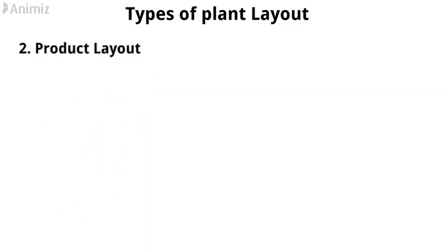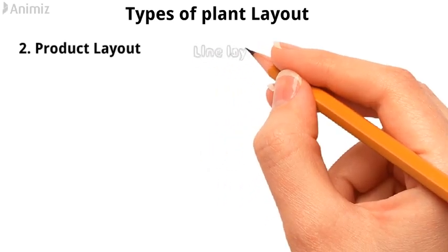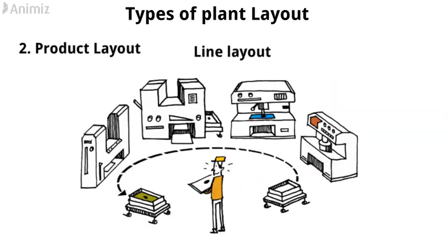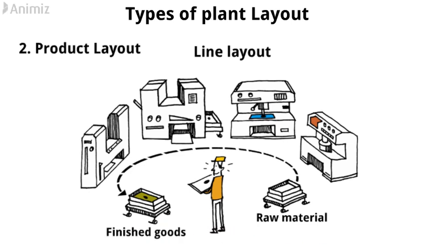Product layout: Product layout is also known as line layout. Various operations on raw material are performed in a sequence, and machines are placed along the production flow line.